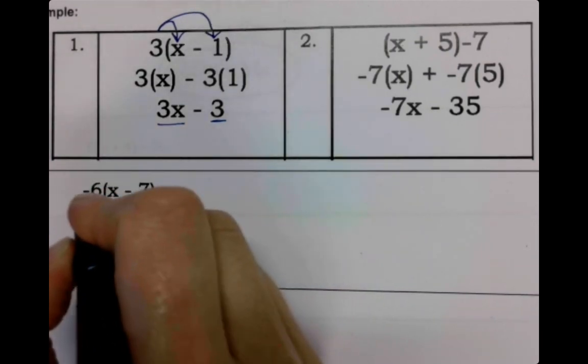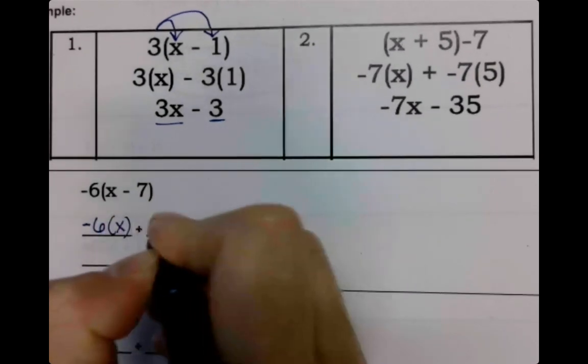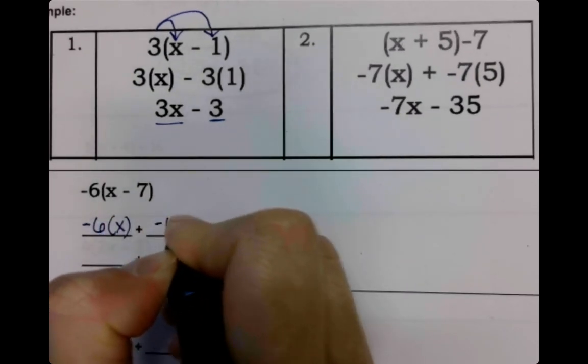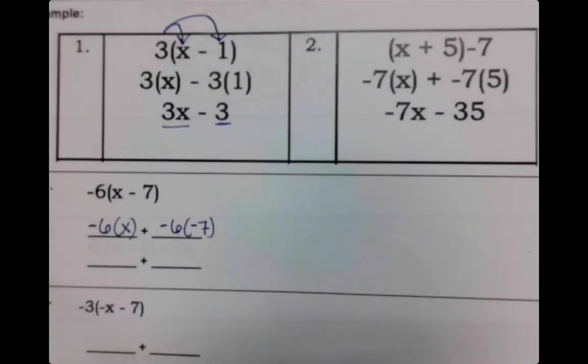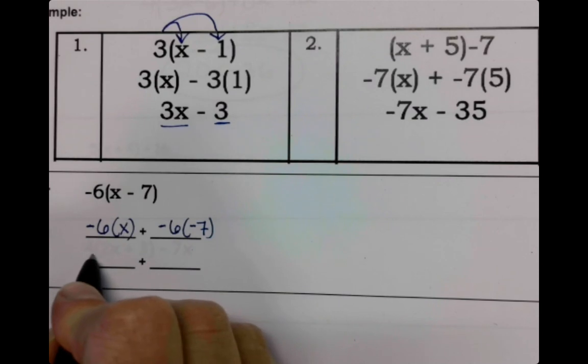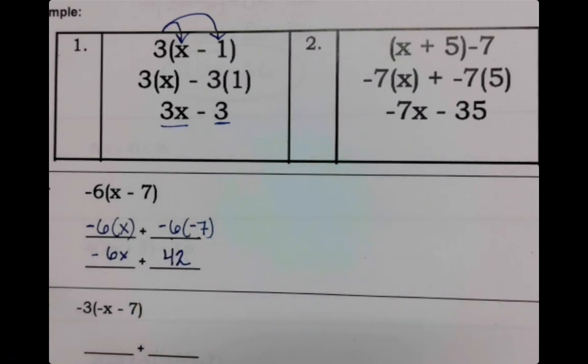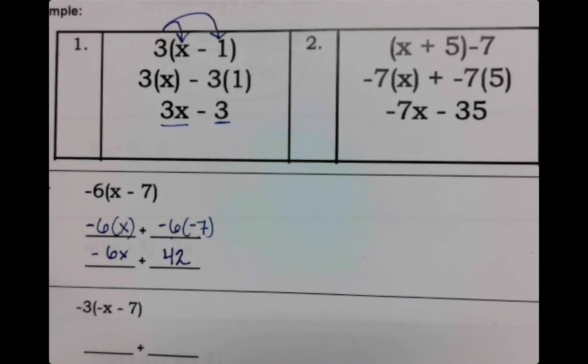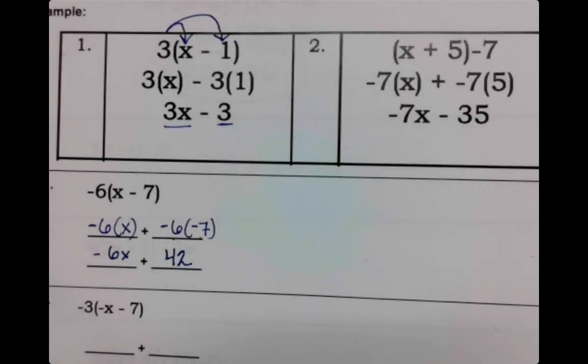But this, we talked about a negative 6 would be on the outside and then it would be times x. The negative 6 would be on the outside and it'd be times negative 7. Negative 6 times x, that's just negative 6x. Negative 6 times negative 7, that's just 42. So I believe that you'd be less likely to mess up signs if you do it this way because you can kind of take the sign with it, but you do you.